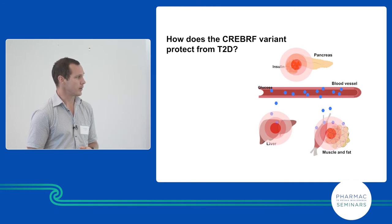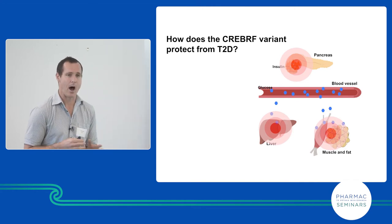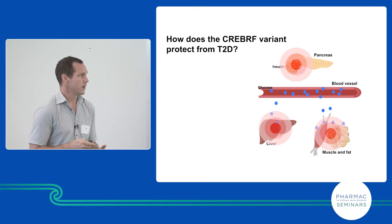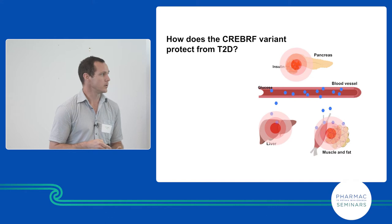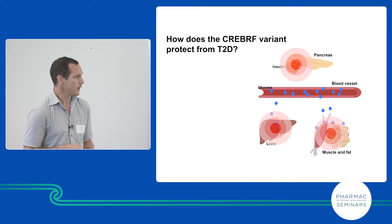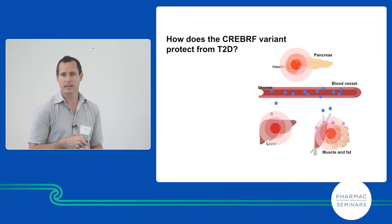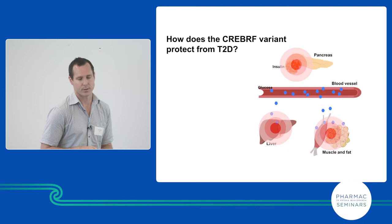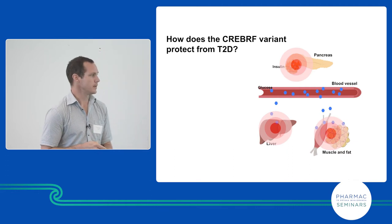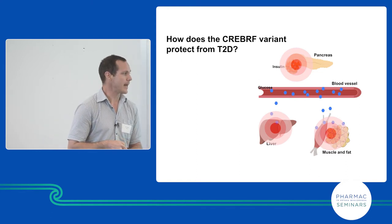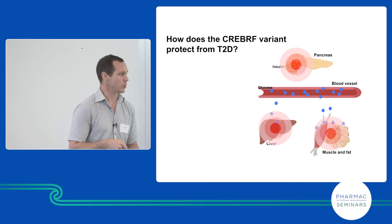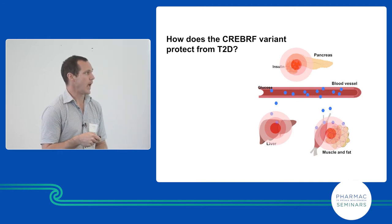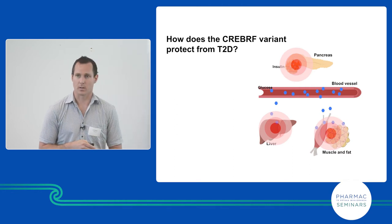In the last couple of minutes, I'll tell you about the work we're doing to understand how CREB3RF is protecting from type 2 diabetes. Following a meal, your blood glucose levels increase, and this results in the pancreas releasing insulin, which goes into your bloodstream and allows glucose to be transported into your fat and muscle cells — it can't get in without insulin — and it stops glucose being produced from the liver. Under diabetes conditions, we have issues with being unable to stop glucose production from the liver, unable to take glucose into muscle and fat, and eventually pancreatic beta cells don't work properly.